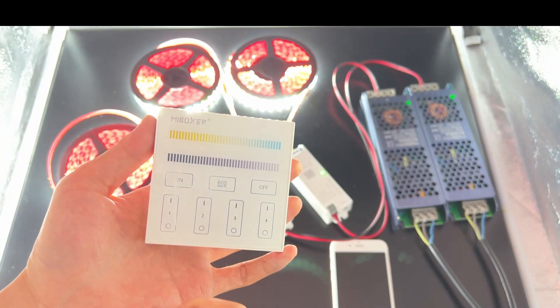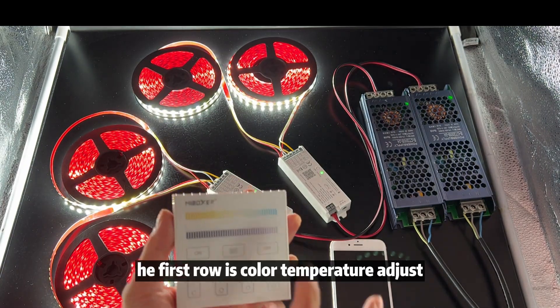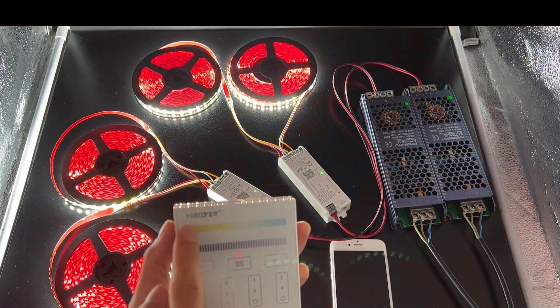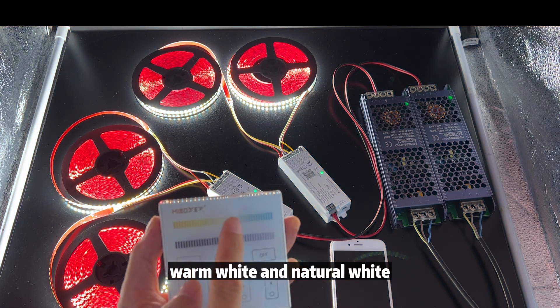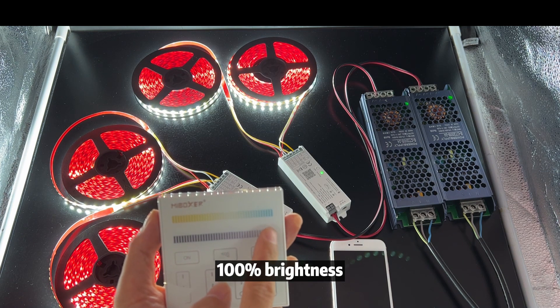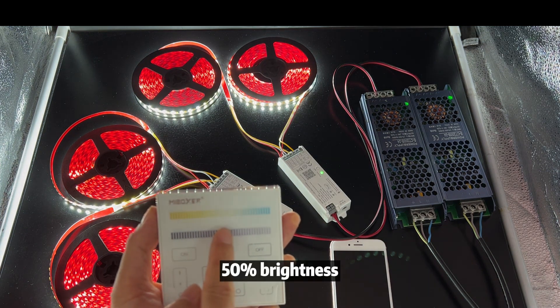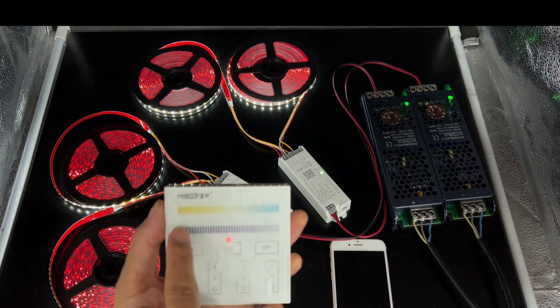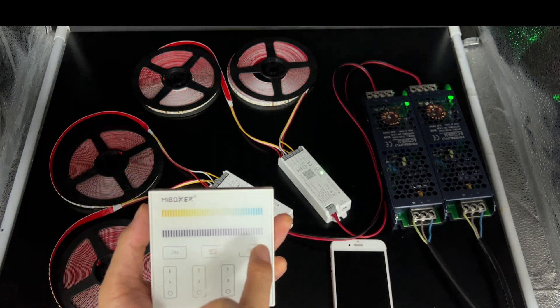Now open the panel. The first row is color temperature adjust. Warm white and natural white. Cool white 6500K. 100% brightness, 50% brightness, 1% brightness. Turn off and turn on.